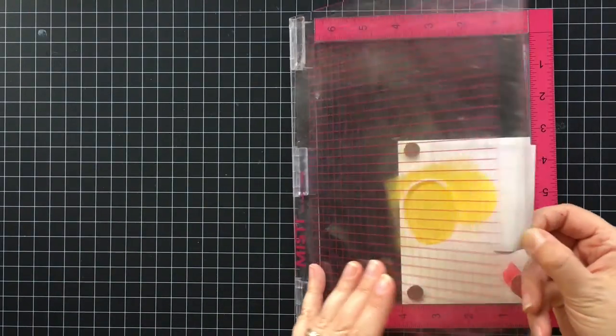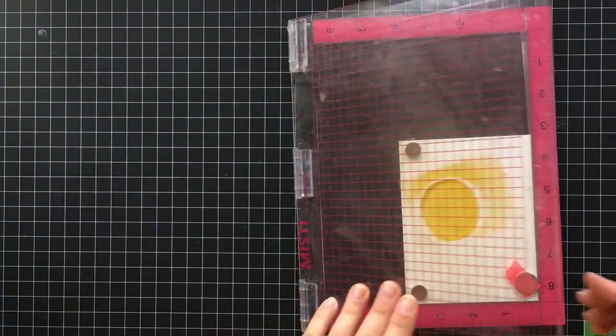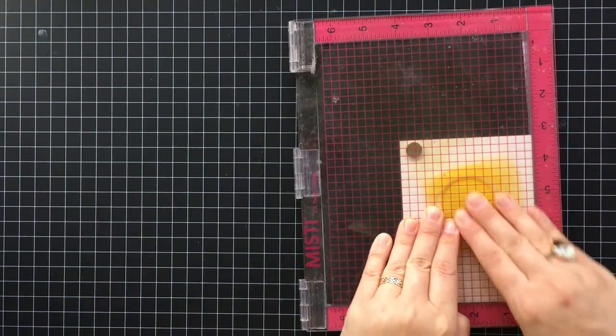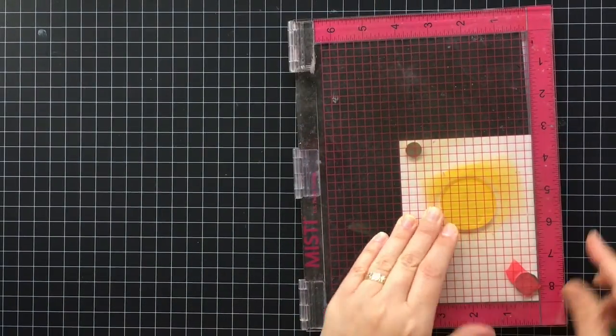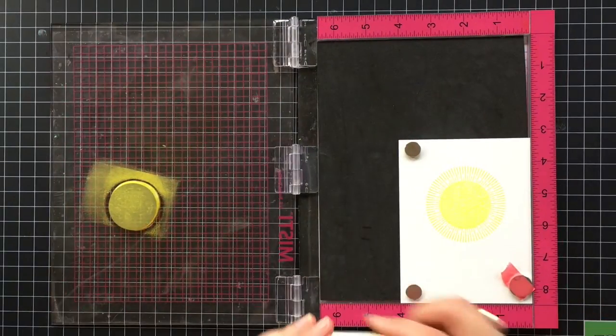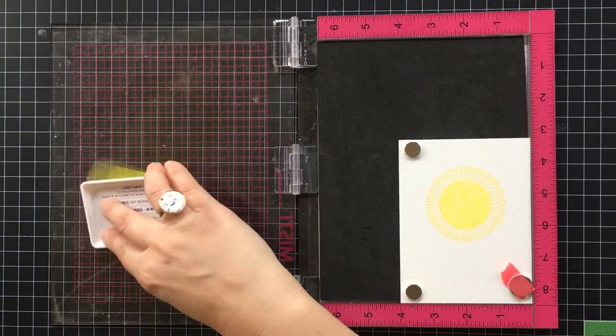You can use scrap paper if you don't want to use post-it note. What this will do is remove some of the ink so that when you go ahead and stamp it, it's a lot lighter than if you had stamped it without removing some ink first.